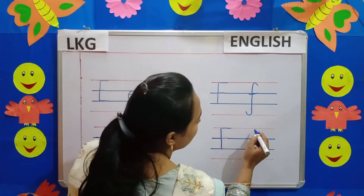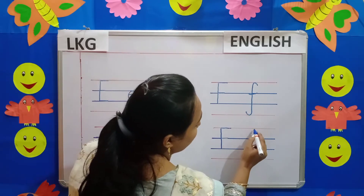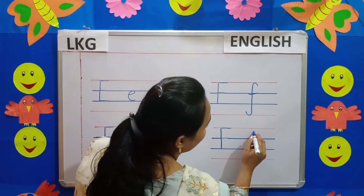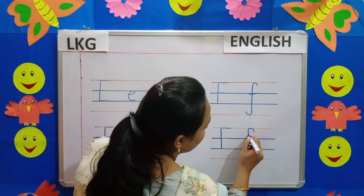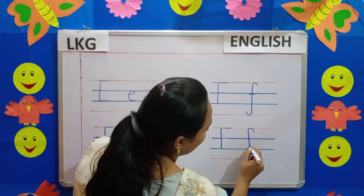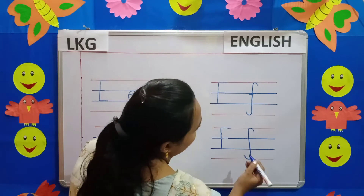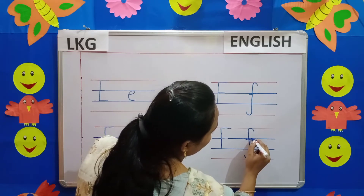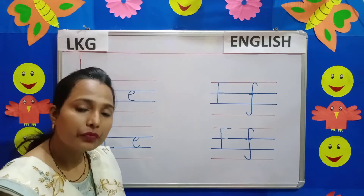Now we will write small letter F. You have to start writing this between these two lines — red line and blue line. Place your pencil here children, go up like this, touch the red line, come down, draw a straight line and touch the red line below, then turn and make a small curve like this. Then come to this blue line and draw a small line like this. So you have written small letter F.